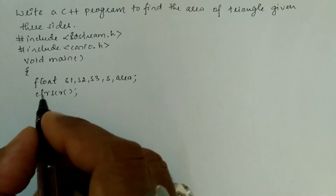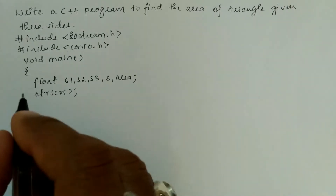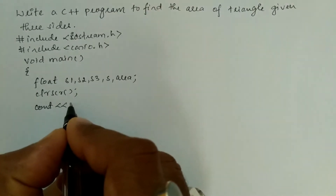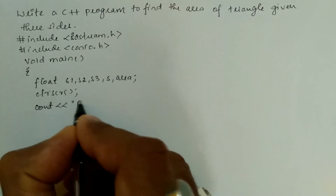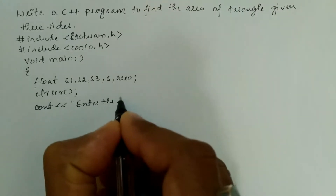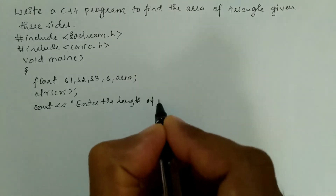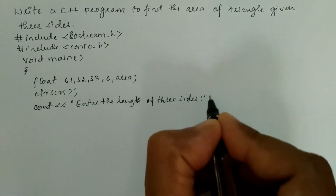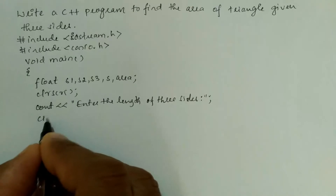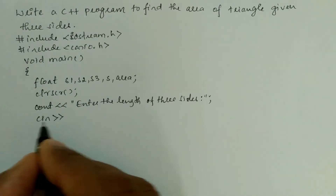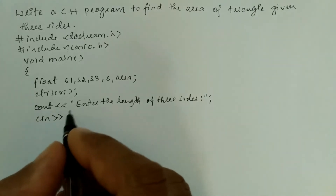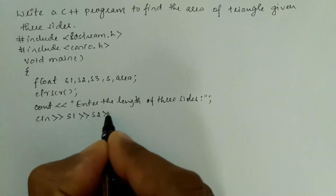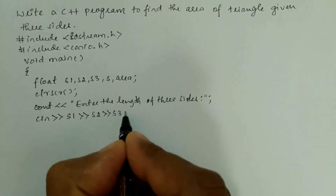Now we will ask the user to enter the sides of the triangle. We write cout with a double quotation mark: "Enter the length of three sides", end the double quotation mark, and put a semicolon. Then we use cin with the stream extraction operator to receive the values for s1, s2, and s3.